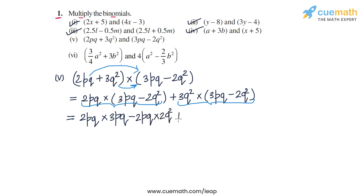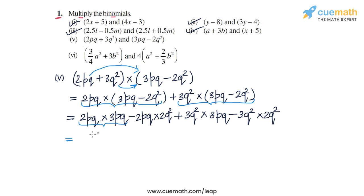Now let's simplify each product. 2Pq into 3Pq: 2 times 3 is 6, P times P is P squared, Q times Q is Q squared, giving 6P squared Q squared. Then minus 2Pq into 2Q squared: minus 2 times 2 is minus 4, there's one P, and Q times Q squared gives Q cubed, so minus 4Pq cubed.